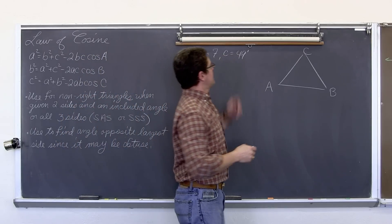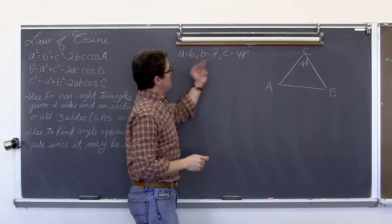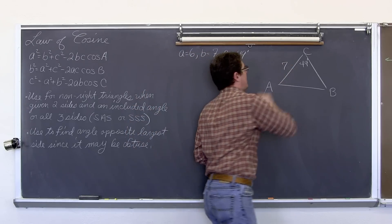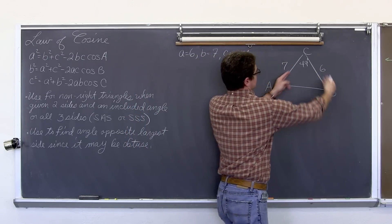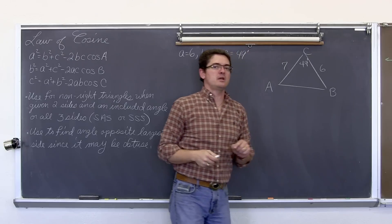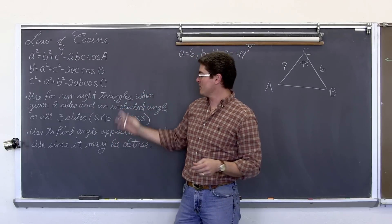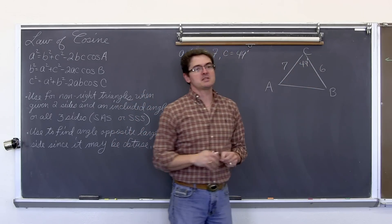So triangle or angle C is 49 degrees, side B is 7 units long, and side A is 6 units. So do you see how these sides that are given are coming together to form the angle of 49 degrees? That is what we are talking about here with two sides and an included angle. That angle is in between the two sides given.